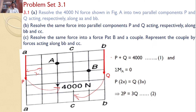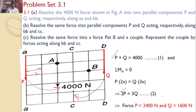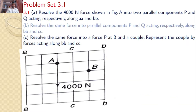There are now two equations: P plus Q equals 4000, and 2P equals 3Q. Upon solving these two equations, the force P is equal to 2400 newtons and force Q is equal to 1600 newtons. These are the answers for part A.